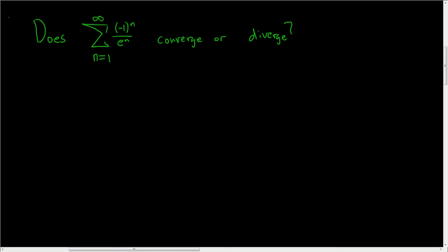We have an infinite series, and we're being asked if it converges or diverges. Let's go ahead and work it out. This is an alternating series.